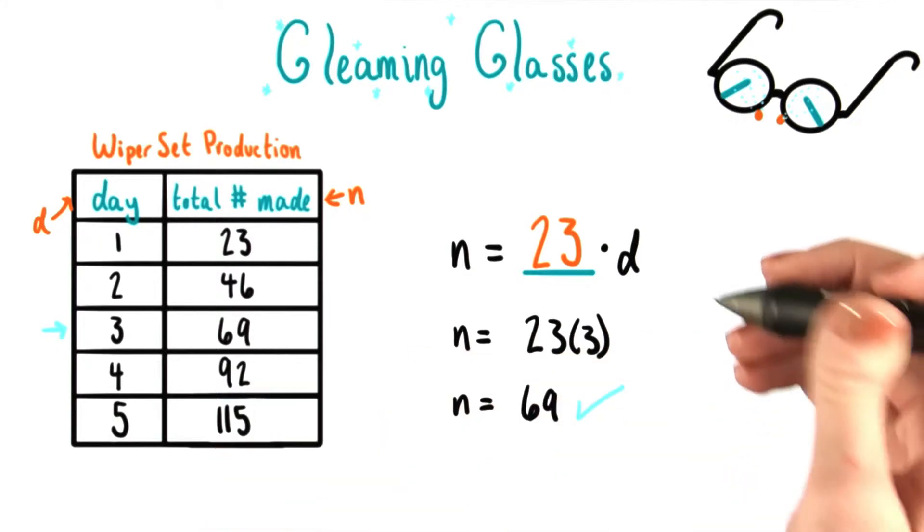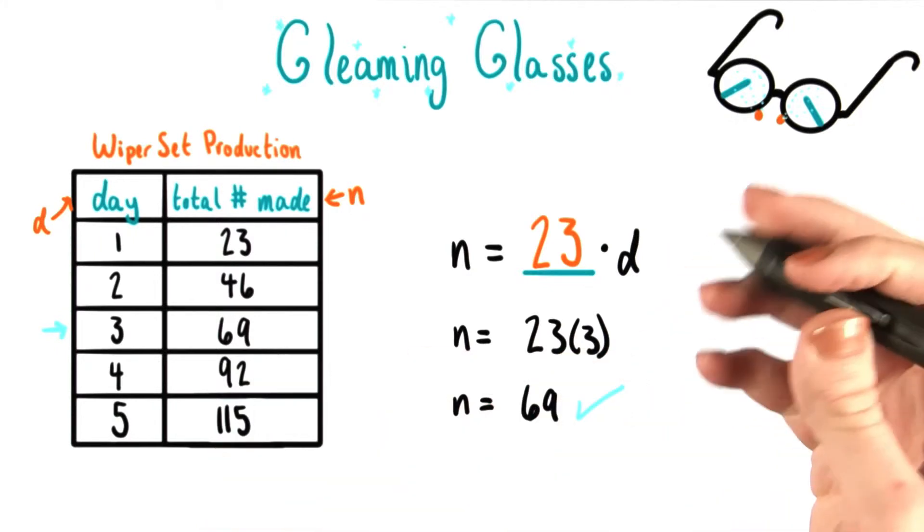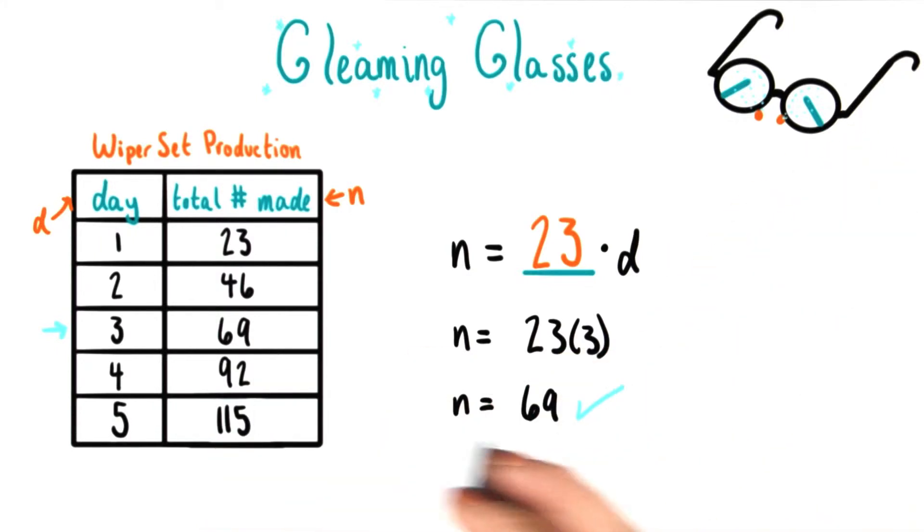That checks off their table so we can see that our equation fits the situation that we were trying to make it fit. You could do a similar thing with any of the other sets of entries on this table. When you plug in a number for d, you should end up with the corresponding number for n when you simplify.